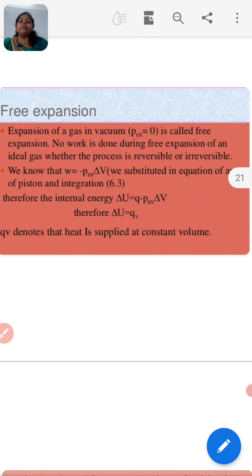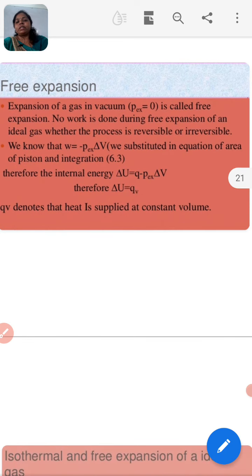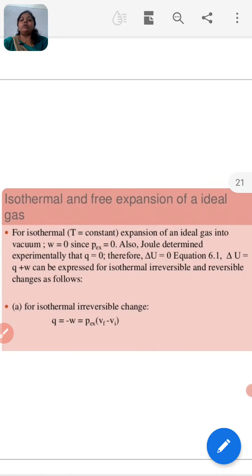We know that w equals minus p_ex del v. We substitute in the equation for the area of piston and integrations, and therefore the internal energy del u equals q minus p_ex multiplied by del v. Therefore, del u equals q_v. q_v denotes that heat is supplied at constant volume.